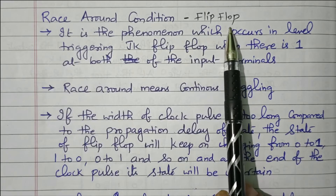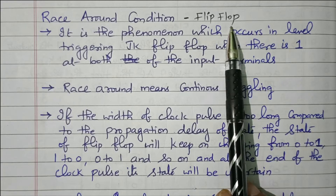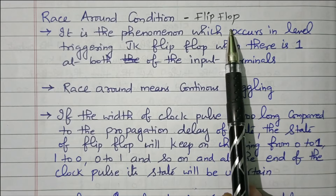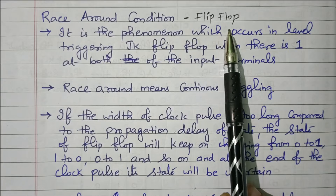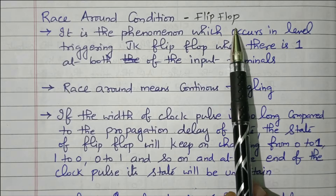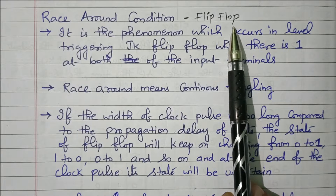We know that a flip-flop is a storage element. It can store 1-bit data. The output depends upon the present state of the output as well as the input. The input and present state of output will decide the next state of output. That is the basic of the flip-flop.